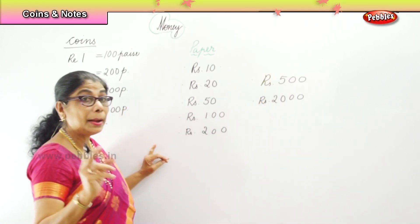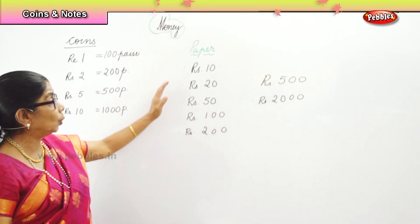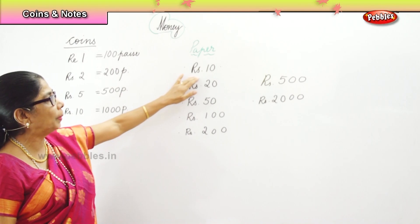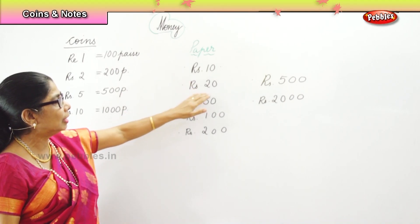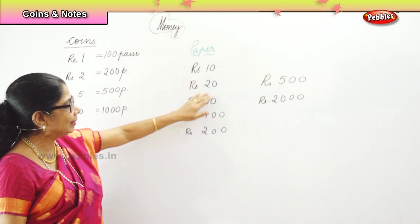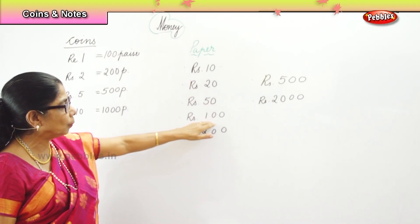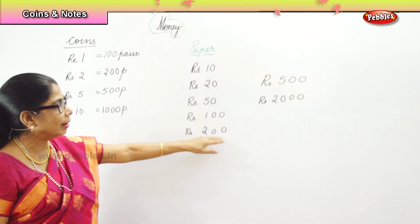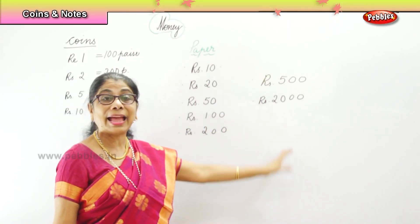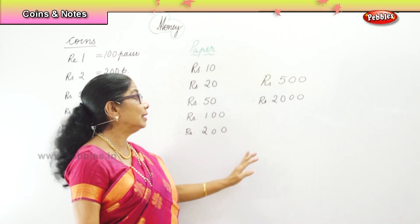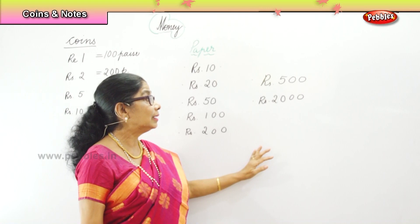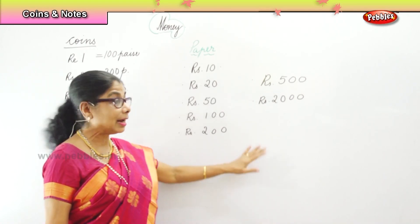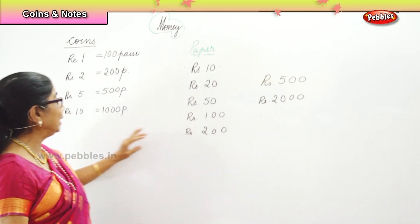Seven paper notes in Indian money: rupees ten, rupees twenty, rupees fifty, rupees hundred, rupees two hundred, rupees five hundred, and rupees two thousand. These are our paper money.